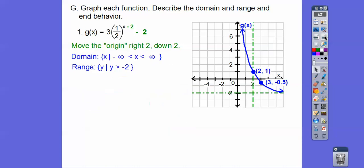So the domain is all left and right movement. So it goes to the left forever and to the right forever. And then it's above this horizontal line y equals negative 2. So it's y is greater than negative 2. And then the end behavior, as we go to the left forever, it goes up. So as x goes to negative infinity, y goes to infinity. And as we go to the right, this graph goes asymptotically to the line y equals negative 2. So as x goes to infinity, y is approaching negative 2.